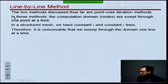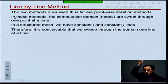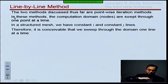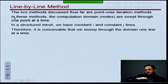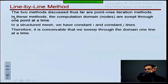We can sweep through the domain such that if you have a bunch of rows and a bunch of columns, you can think of it as sweeping starting from the bottom, going 1, 2, 3, 4, all the way up to M. And then starting from the left, going 1, 2, 3, 4, all the way up to N.